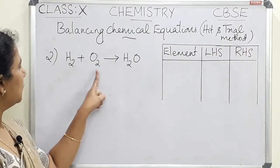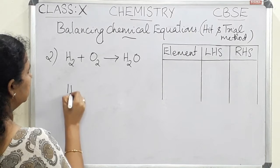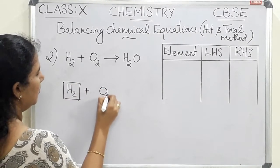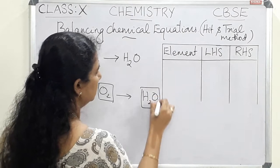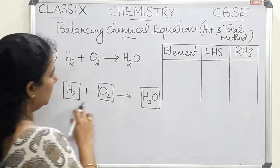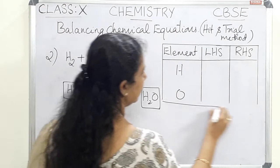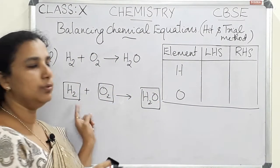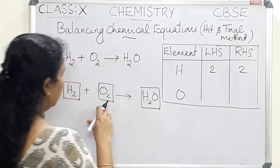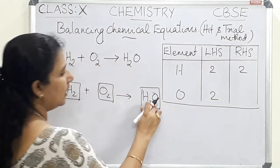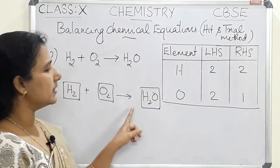The second example is H₂ + O₂ → H₂O. We draw boxes for each substance and set up columns for elements, LHS, and RHS. The two elements are hydrogen and oxygen. In the LHS, hydrogen has two atoms and in the RHS also two. For oxygen, there are two atoms in the LHS but only one in the RHS, so this is an unbalanced equation.